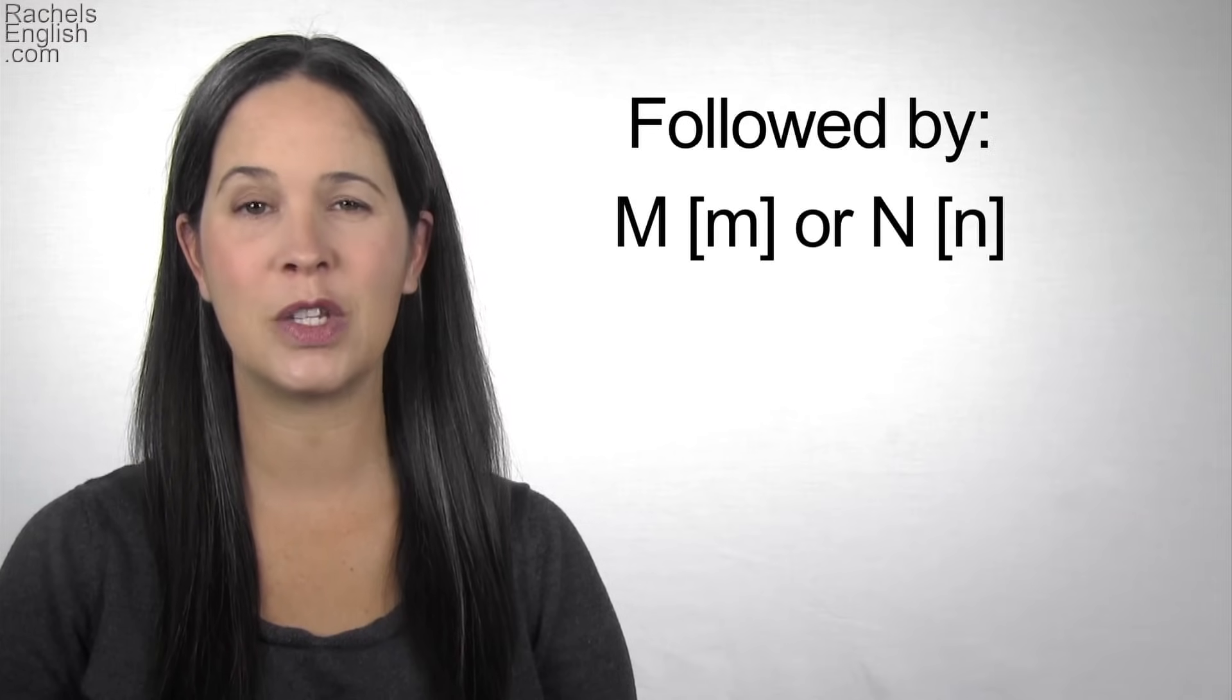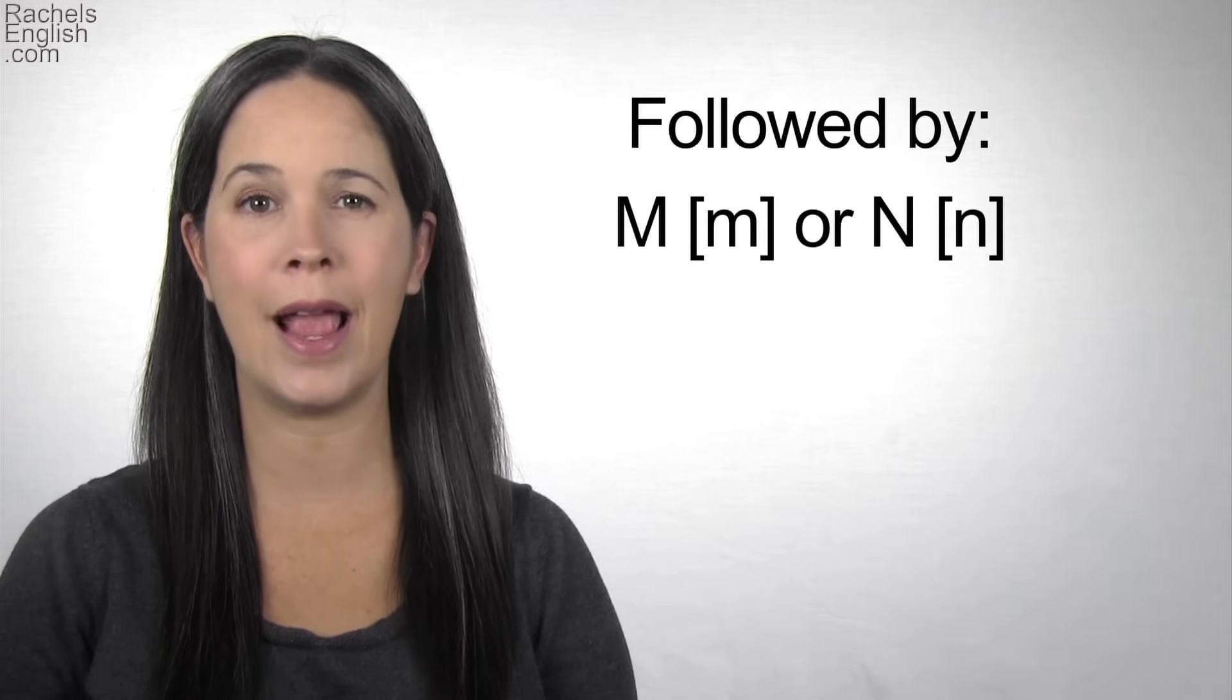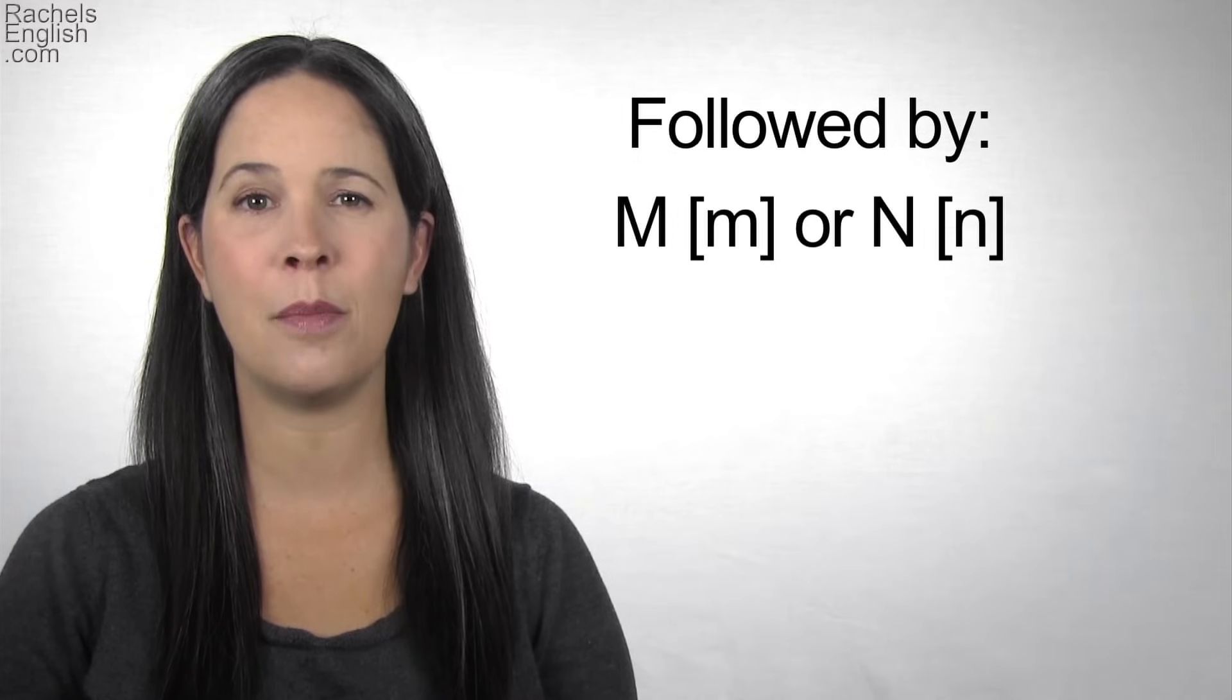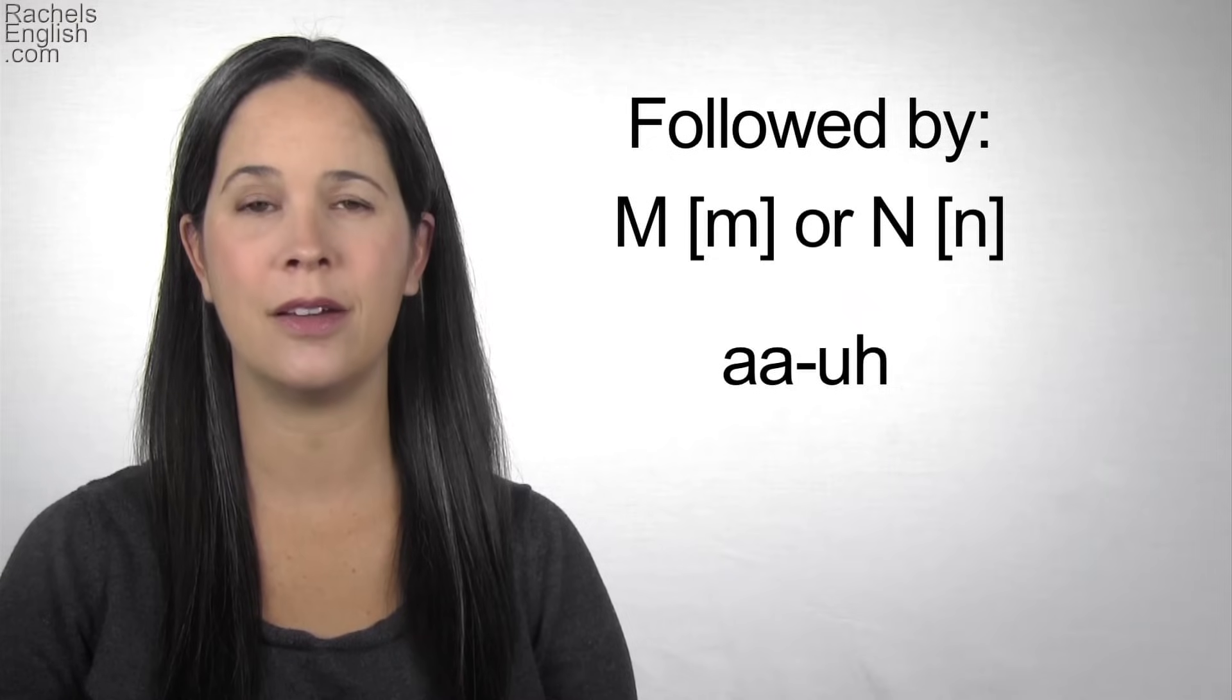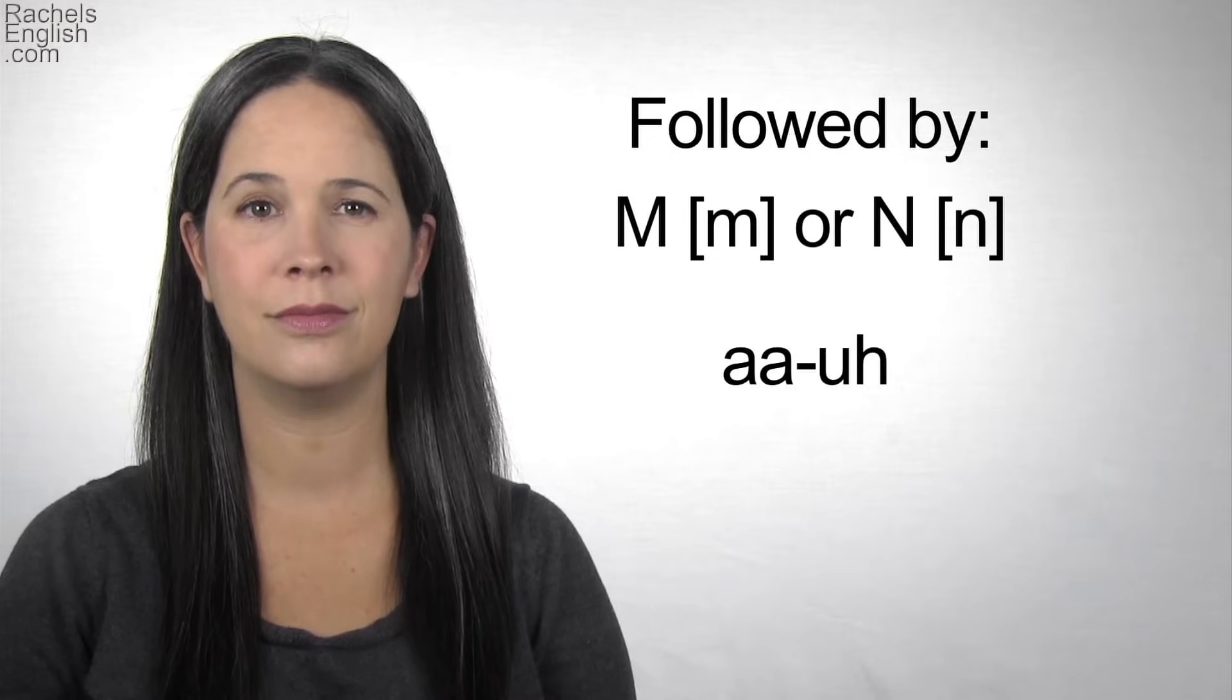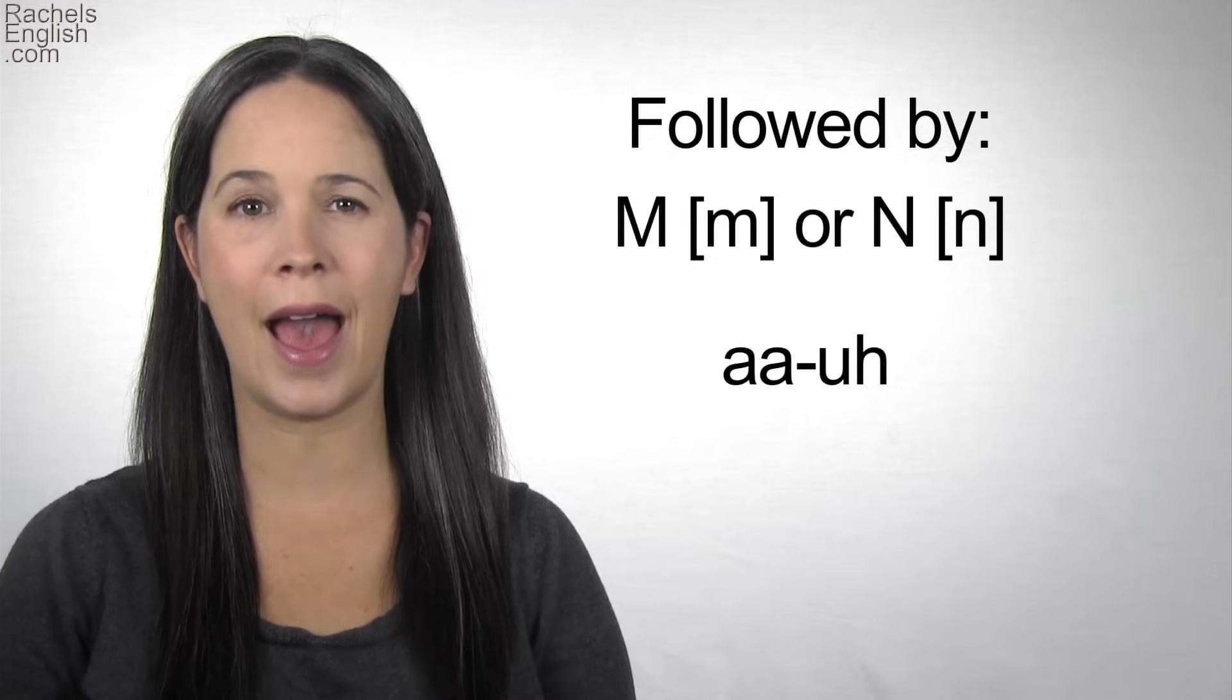This is because unstressed syllables are shorter, so we don't take the time to make the full position. At the beginning of this video, I said the AA vowel is not always a pure AA. This vowel changes when it's followed by a nasal consonant. When it's followed by the M or N sounds, the tongue relaxes in the back, making an UH sound after AA. It's not a pure AA sound.